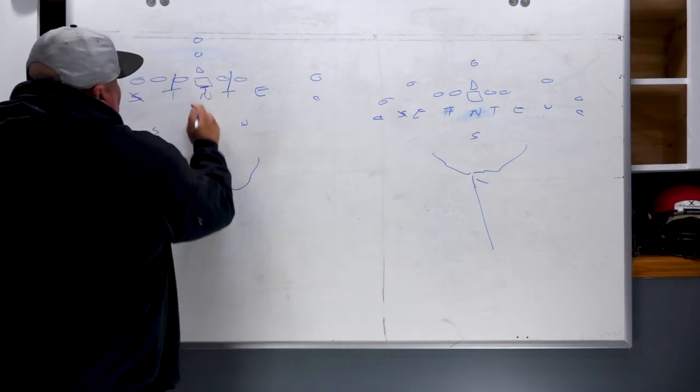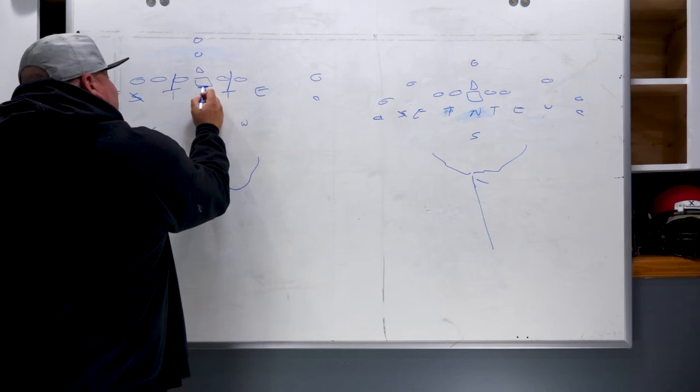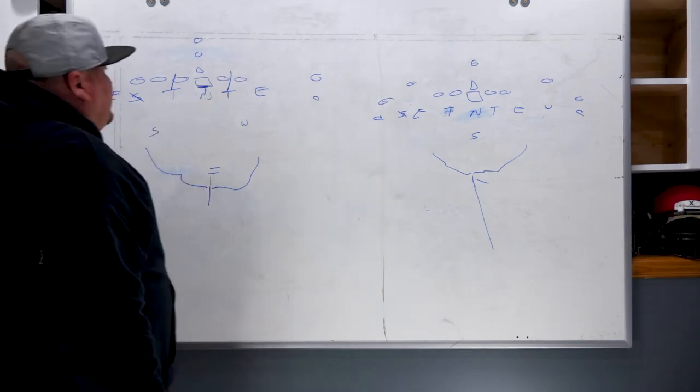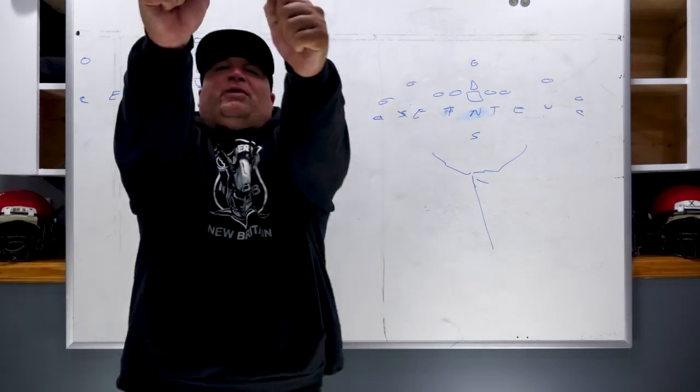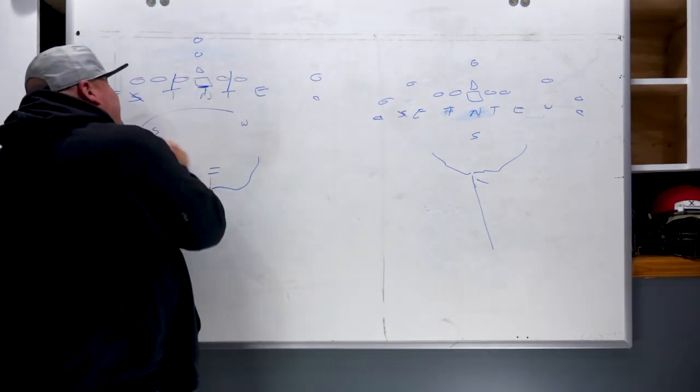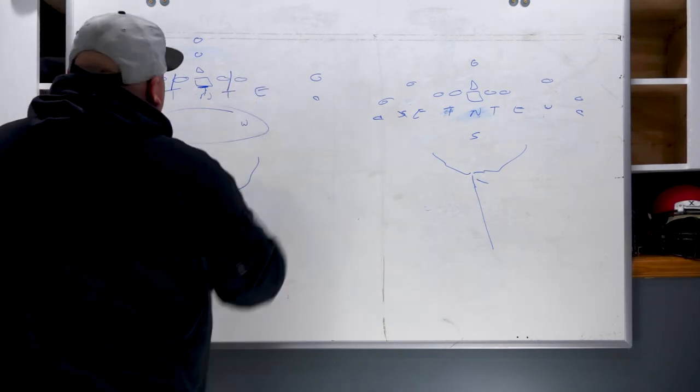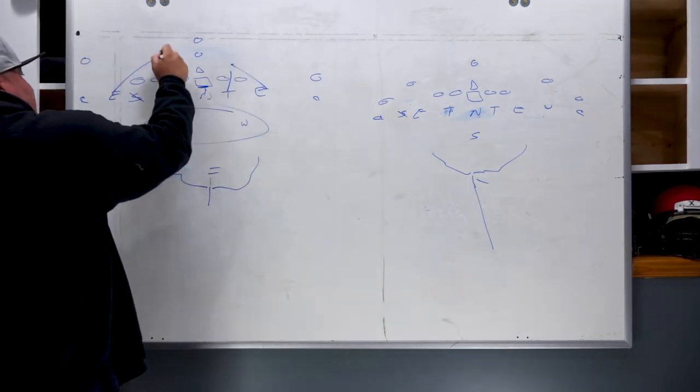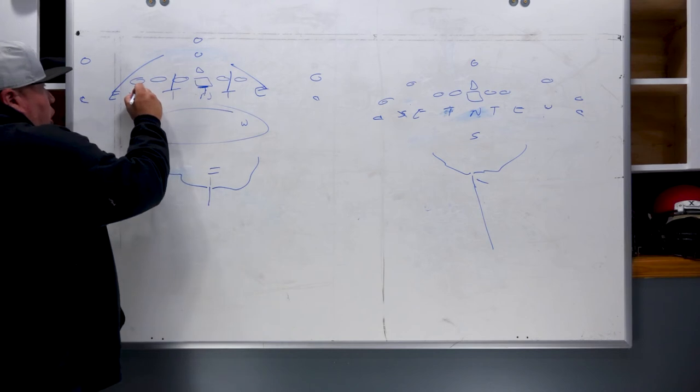The nose is always playing to both A gaps by playing through the head of that center. He's going to play with a two-hand bench press, basically, and try to stand that center up so it leaves our two linebackers free to fit the run inside-out. Ends are always coming. Strong safety is going to mug this tight end and get his hands all over him.